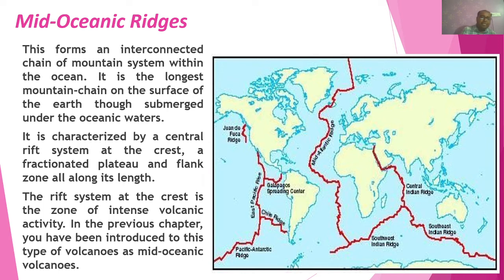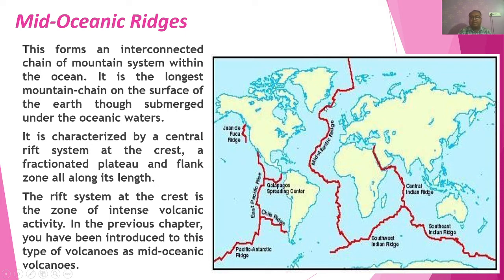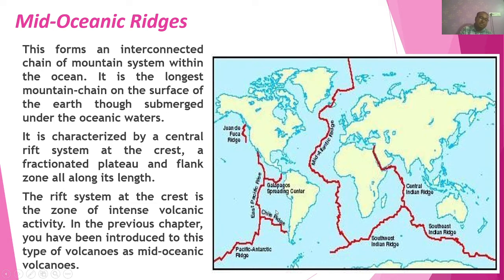The next point is the mid-oceanic ridge. These form an interconnected chain of mountain systems. Inside the ocean, we can see mountain systems — it is the longest mountain chain on the surface of the Earth, though submerged under oceanic water. The mid-Atlantic ridge runs from the southwest Indian ridge and its stretch is equivalent in length to three Himalayan ranges. Other ridges include: southwest Indian ridge, central Indian ridge, southeast Indian ridge, Chile ridge, Galapagos ridge, east Pacific ridge, and Pacific Antarctic ridge — these are some very important ridges.